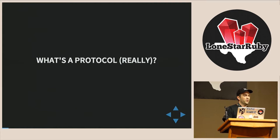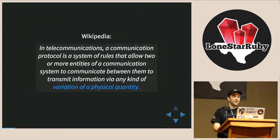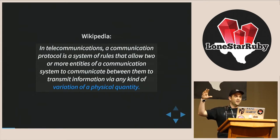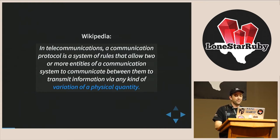What is a protocol, really? It's basically a communication structure that's known in advance. Two entities need to communicate, and they need to know in advance what the data they're getting means semantically. There's a fun aside here about variation of physical quantity — we all deal in abstractions, but at a certain point all of this becomes physics. Right now sound is going through wires, electrons are moving, pulses of light on a wire — that's how two machines can know about each other speaking.